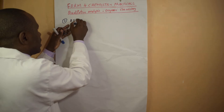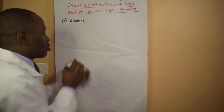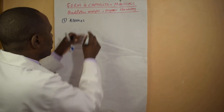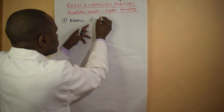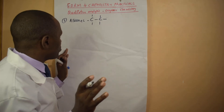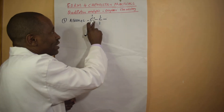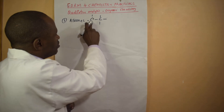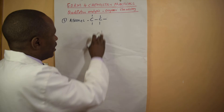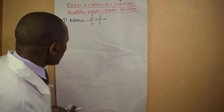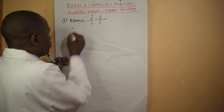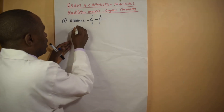Let's start with the alkanes. The alkanes are represented by their general formula. They are saturated — between the carbons we have single bonds only. Now let's look at their properties.